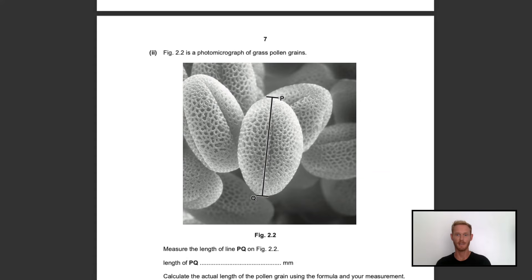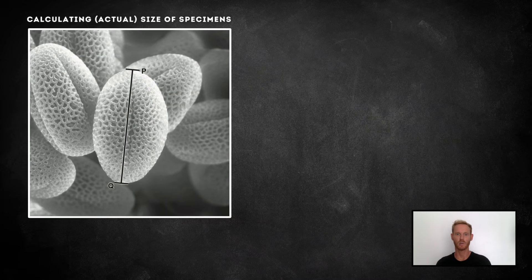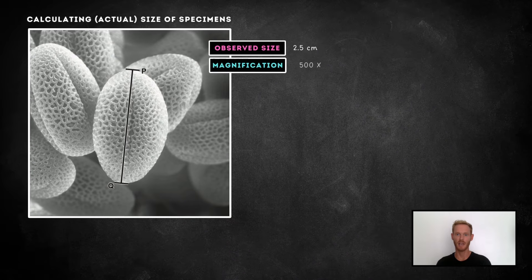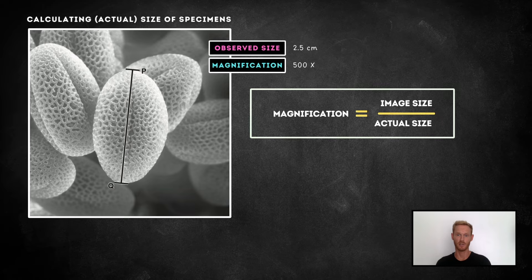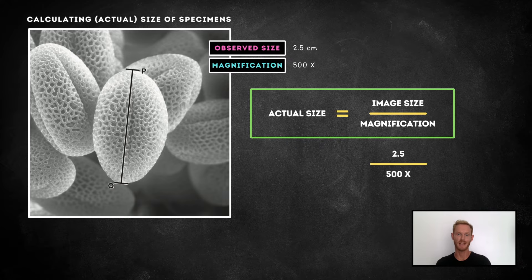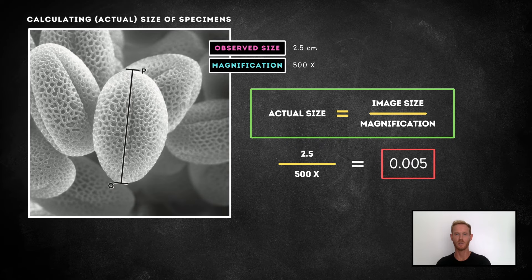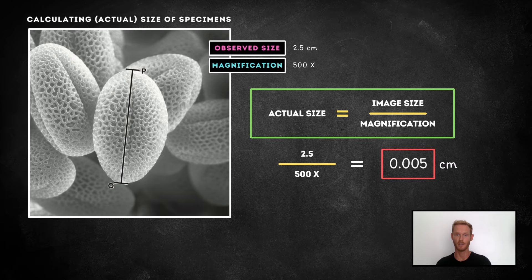In addition to calculating magnification, in your exam you could also be asked to calculate the actual size of a specimen, given an image and a magnification number. First, you'll need to rearrange the equation, so that actual size equals image size divided by magnification. Then you simply enter the figures provided, giving us an actual size of 0.005. Now when you give your answer, make sure you quote the units, which will be the same as those used for measuring the observed size, so in this case, centimetres.